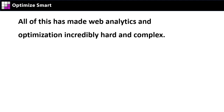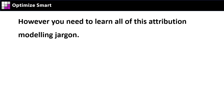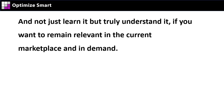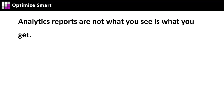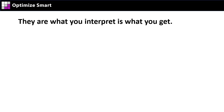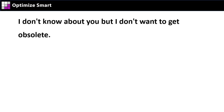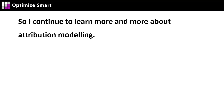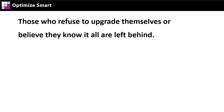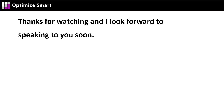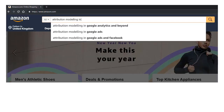All of this has made web analytics and optimization incredibly hard and complex. However, you need to learn all of this attribution modeling jargon — and not just learn it, but truly understand it — if you want to remain relevant in the current marketplace and in demand. Gone are those days when you were advertising on just one marketing platform and device and attributing sales was as easy as looking at an analytics report. Analytics reports are not 'what you see is what you get' — they are 'what you interpret is what you get.' So you can no longer ignore attribution modeling. I continue to learn more and more, because the market rewards those who continue to add value. Those who refuse to upgrade themselves are left behind. Thanks for watching and I look forward to speaking to you soon.